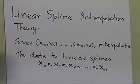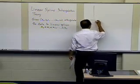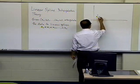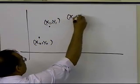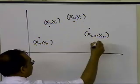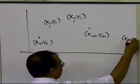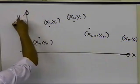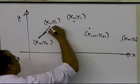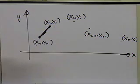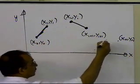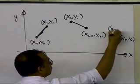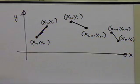Let's draw a figure showing the data points. If I have x0, y0; then x1, y1; then x of i, y of i; x of i plus 1, y of i plus 1; and the last one xn, yn — linear spline interpolation is simply drawing straight lines between consecutive data points. You draw a straight line between x of i and x of i plus 1, and similarly between xn minus 1 and xn. That's all you're doing in linear spline interpolation.